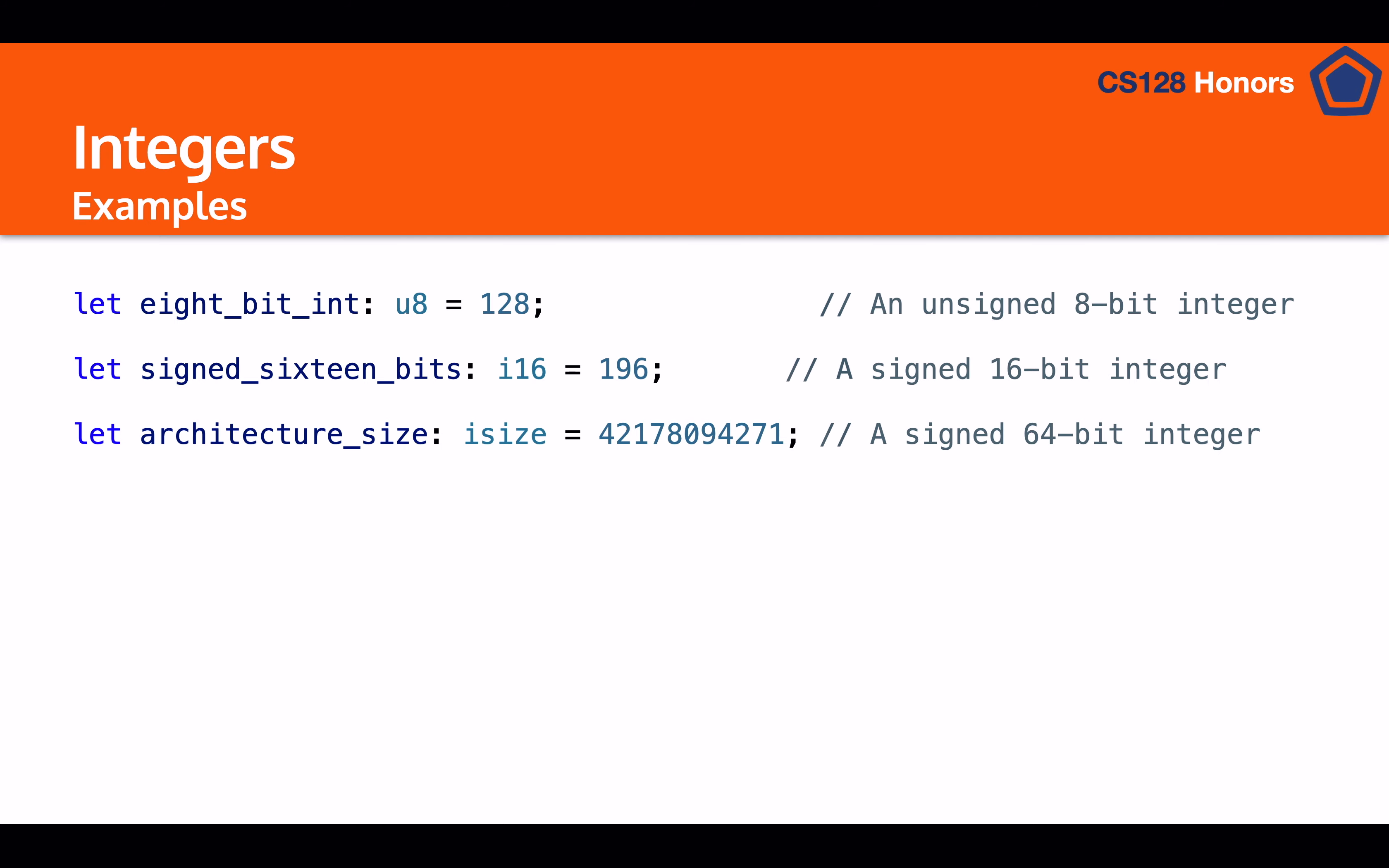So let's take a look at a few examples of integers. So the first example that we have is an 8-bit integer that's unsigned, which means it can go all the way up to 255 from zero, and it will be able to store that just fine. Then the next example we have is a signed 16-bit integer, which we're using to store 196. Now right here you can see we're using an i16, which means that it is a signed 16-bit integer.